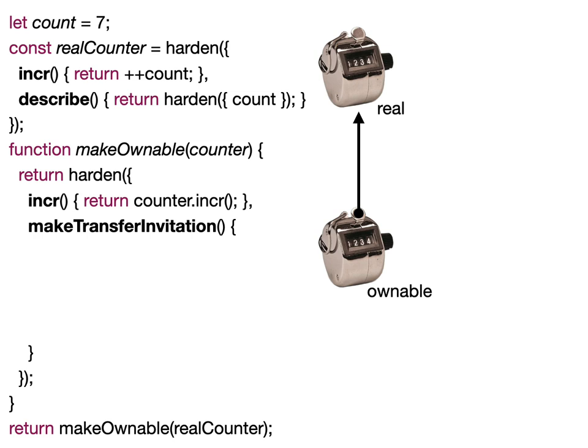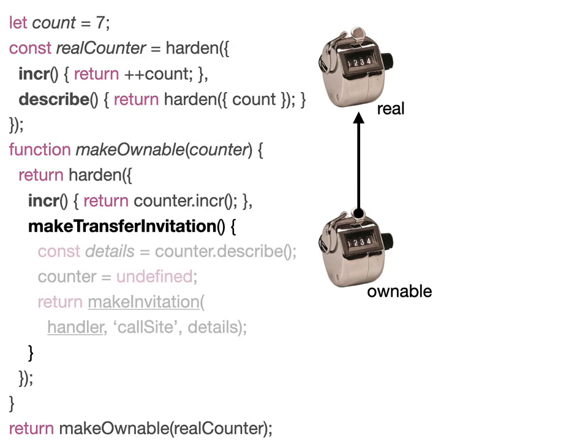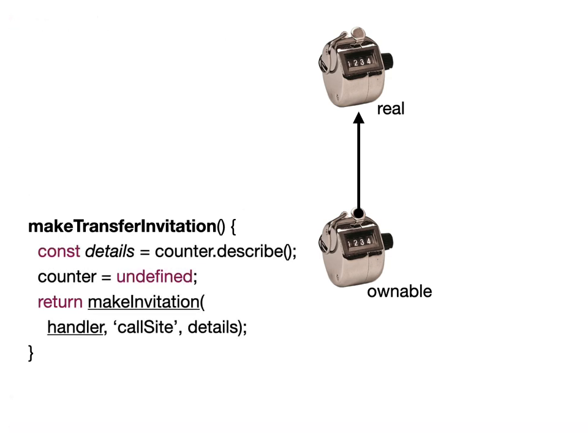In this case, it forwards the increment message, but instead of forwarding the described message as well, it provides its own makeTransfer invitation method that's purely there in the ownable counter. The makeTransfer invitation method on the ownable counter is the thing that's given out as the object capability that others can use.